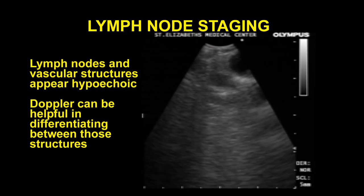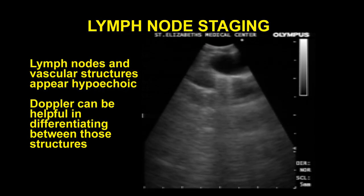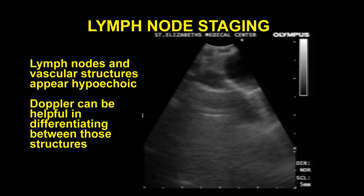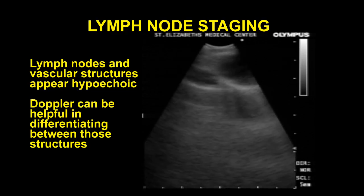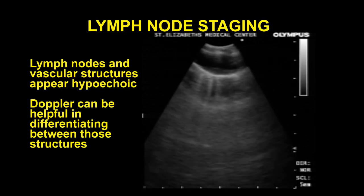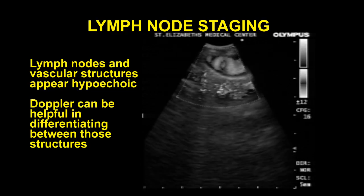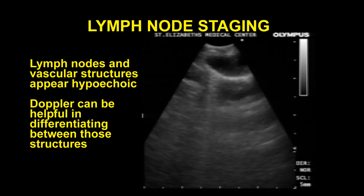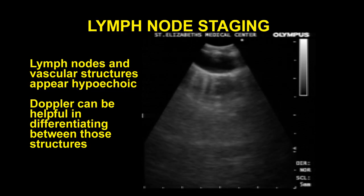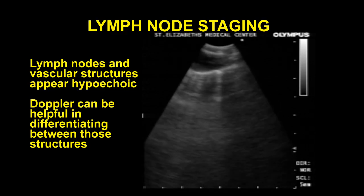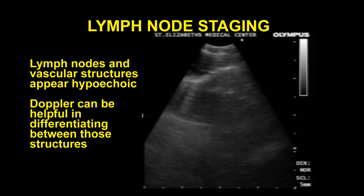Lymph nodes appear hypoechoic and should be differentiated from vascular structures using color Doppler. Any lymph node with a short axis greater than 5 mm should be sampled.